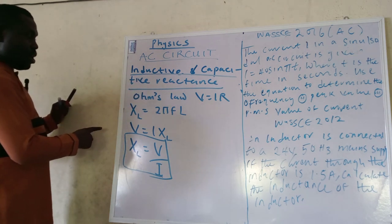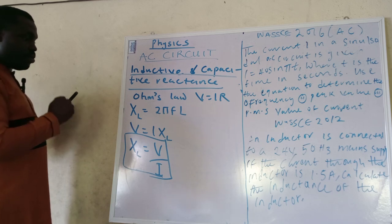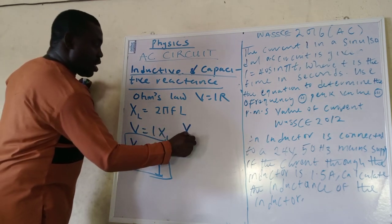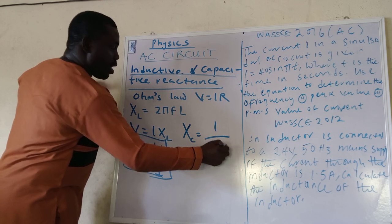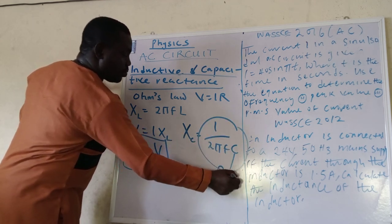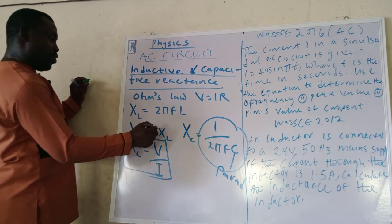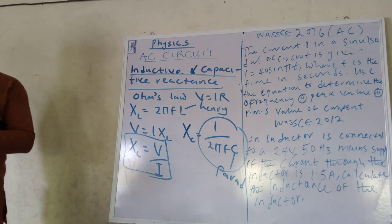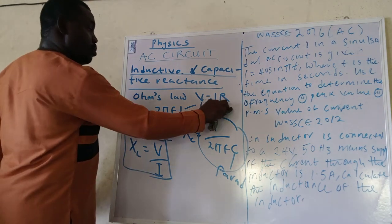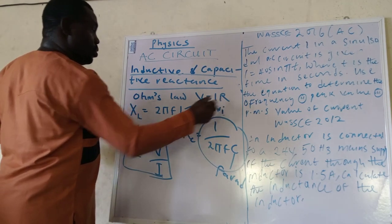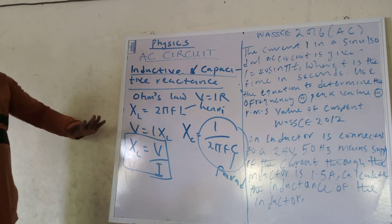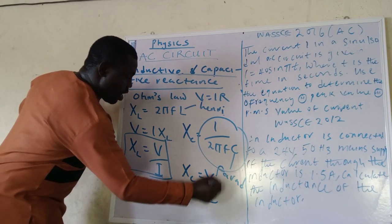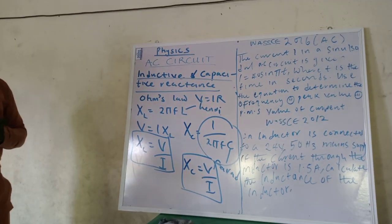From our root mean square value, we also see another relationship. We go to capacitive reactance, which is given as X_C = 1/(2πfC), where C is in farads and X_C is in ohms. This means that X_C = V/I as well, just as we derived for inductive reactance.